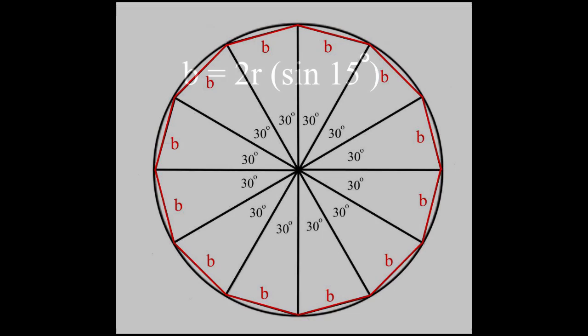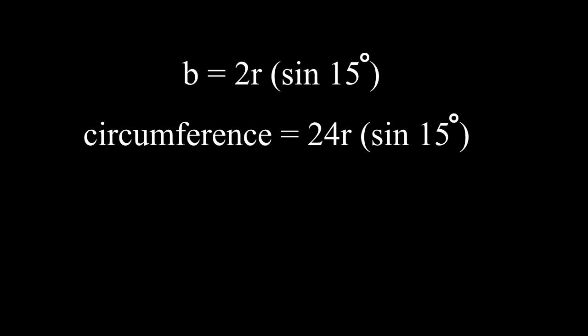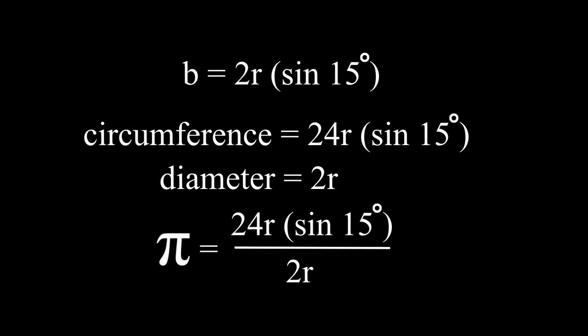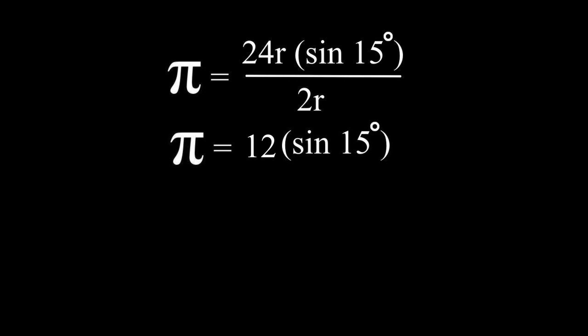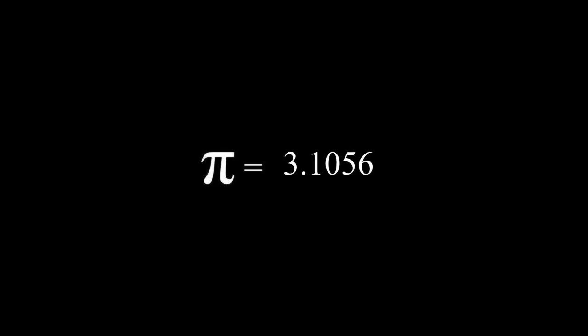For this example, b equals 2 times r times the sine of 15 degrees. The circumference is 12 times that, which gives us a value of the circumference of 24 times r times sine of 15. The diameter of this circle is twice the radius, 2r. Pi equals circumference divided by diameter, which in this case gives us 12 times the sine of 15. The sine of 15 degrees is 0.2588. 12 times 0.2588 gives us a value of 3.1056 for pi. Not very close to the accepted value of 3.1416.